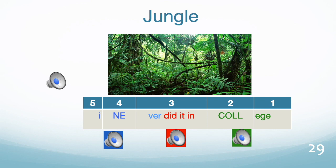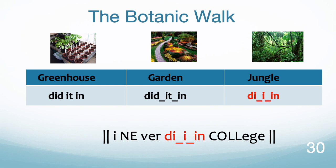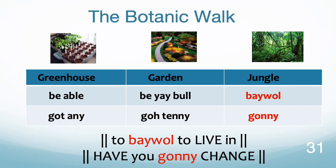A key methodological thing I encourage in teacher-led activities is to do the botanic walk, so that everybody in the class gets a feel — through what I call vocal gymnastics — of the relationship between the sight-friendly greenhouse and garden versions and the jungle versions. So led by the teacher, the class should go: 'did it in' — 'did it in' — 'din.' Then: 'I never did in college' — 'did-did-tin' — 'did it in.'